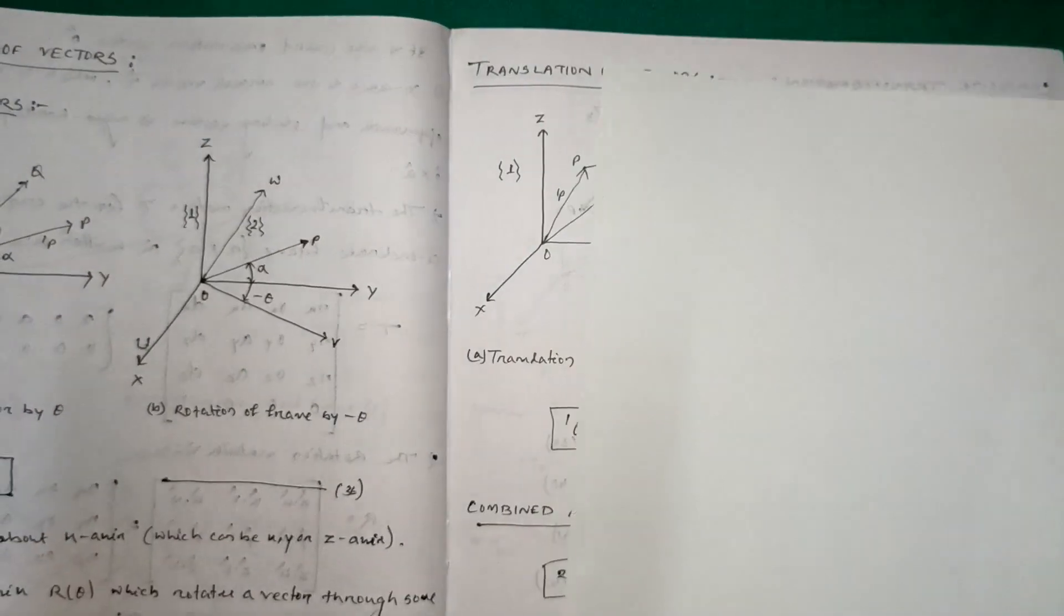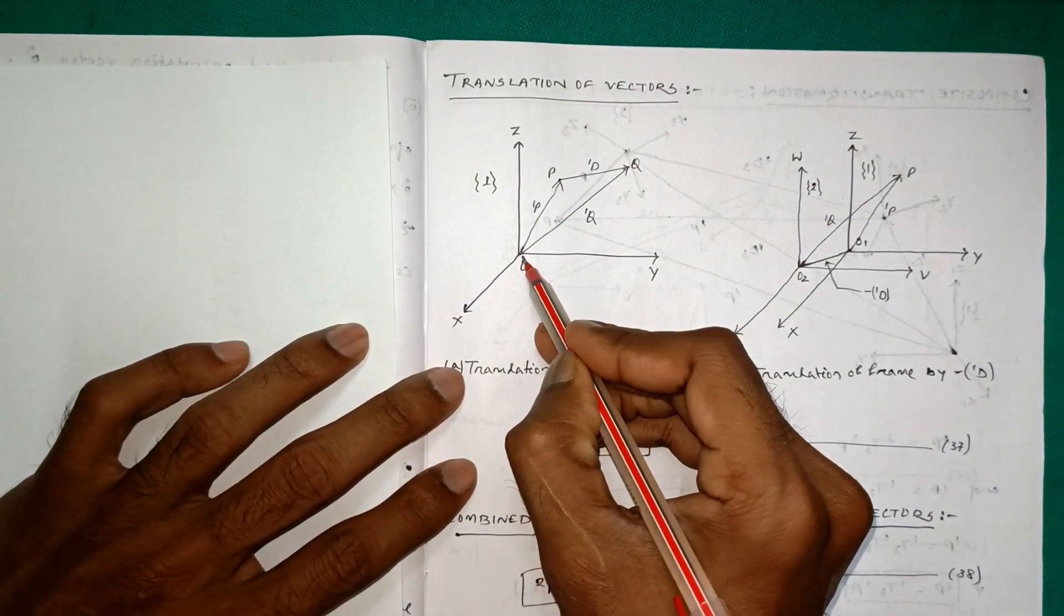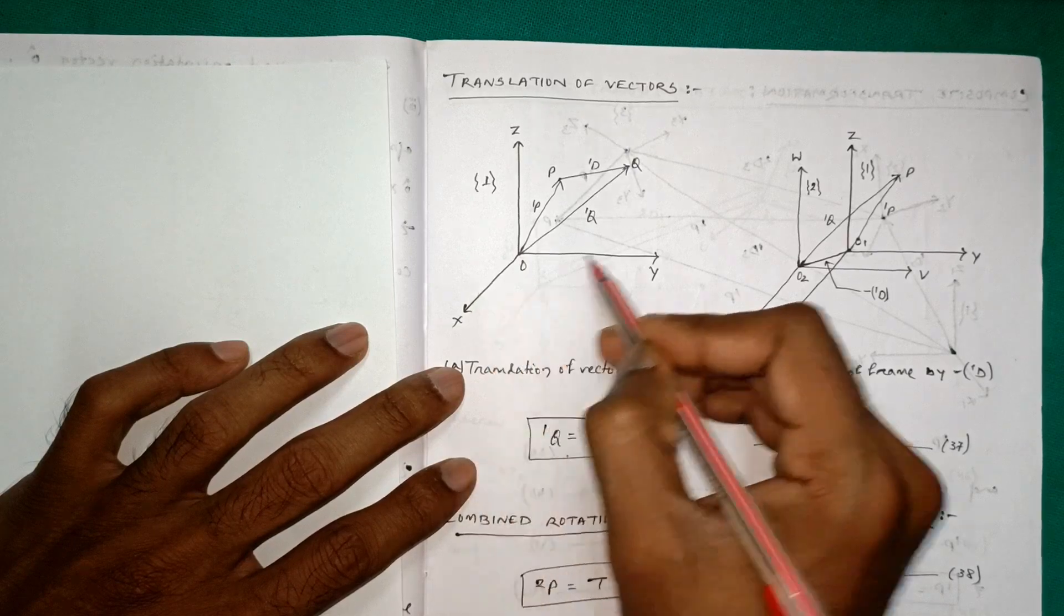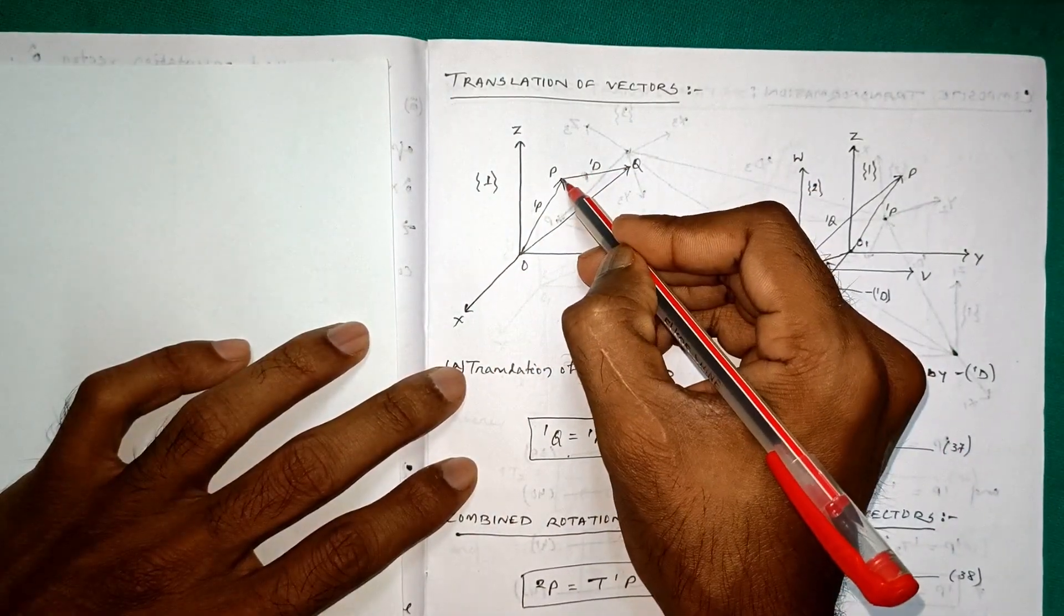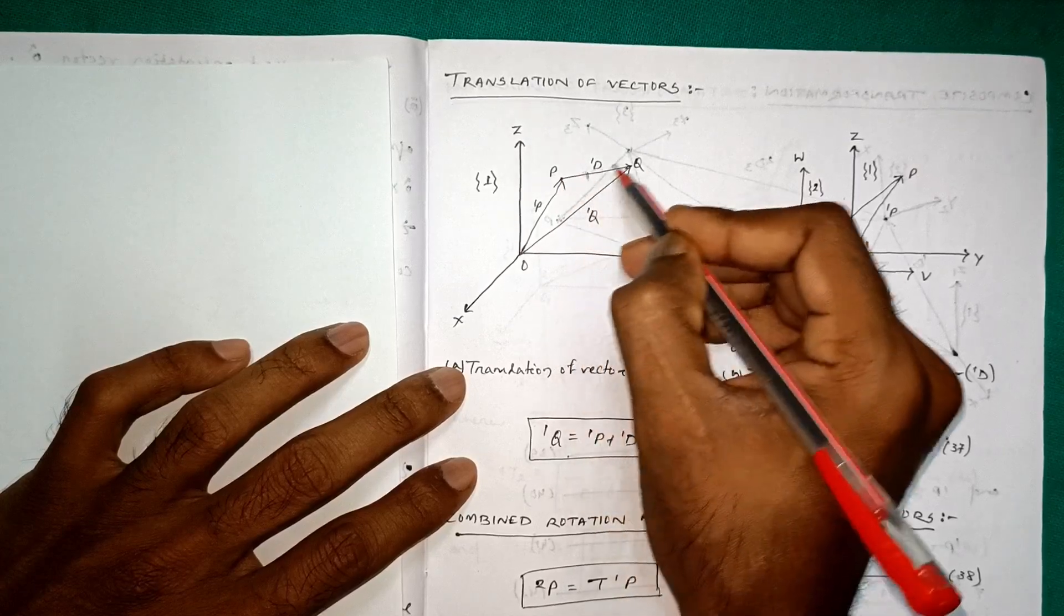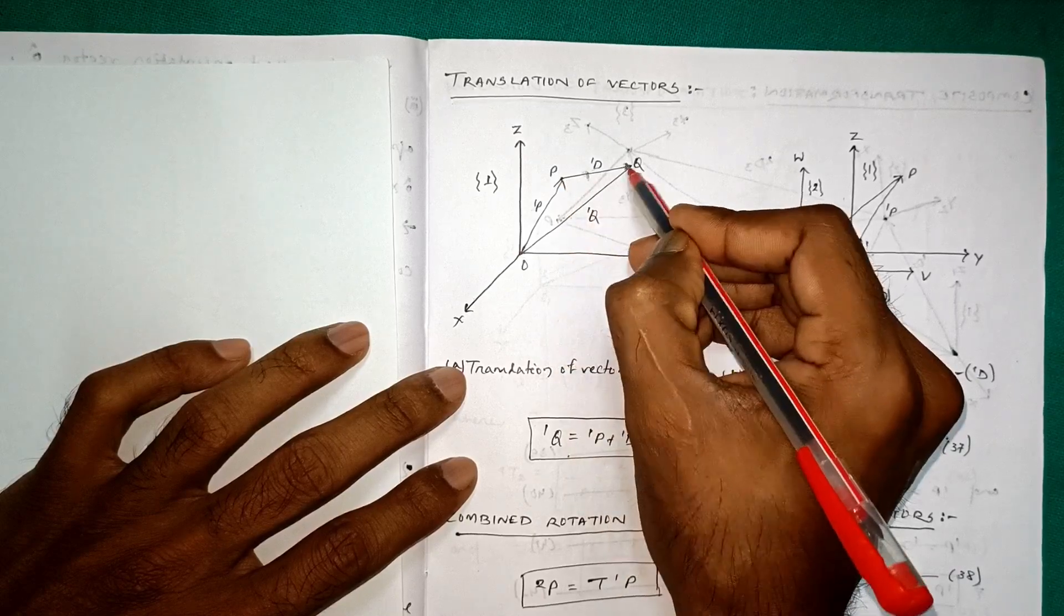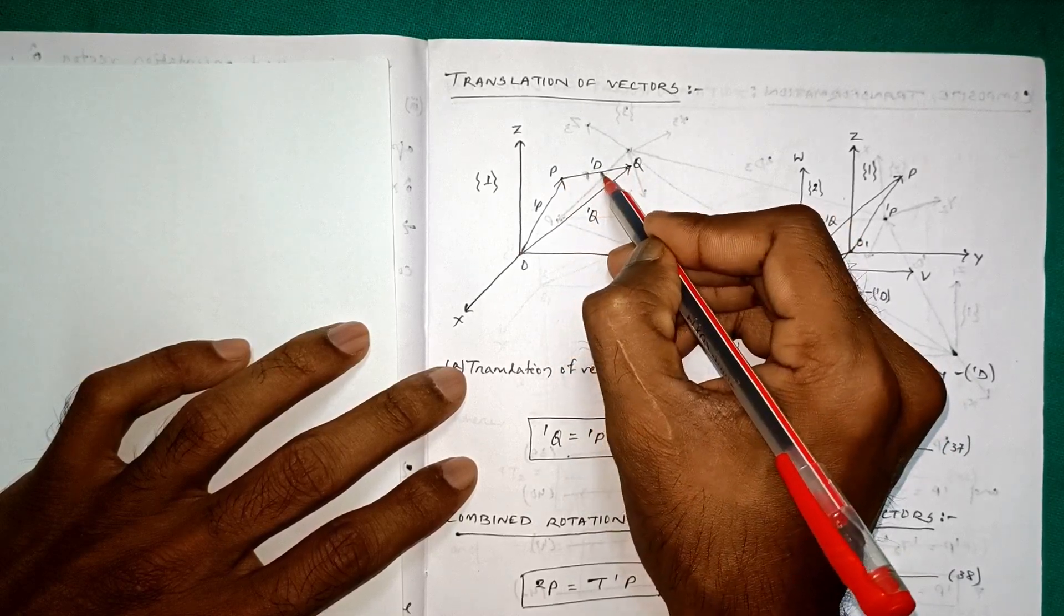The second one is translation of vectors. This is the point O and the principal axis is X, Y, Z. The point taken is P. This is 1P and the translation occurred from here to here, that is from P to Q, and this is the translation vector 1D.